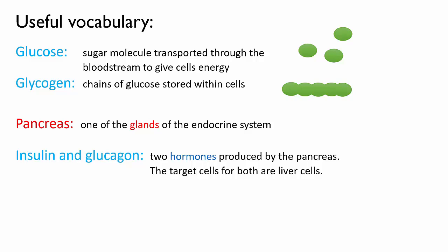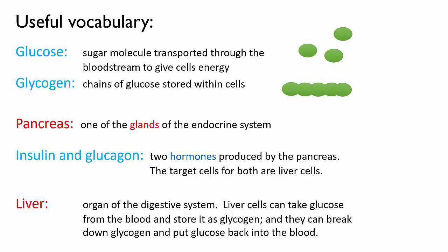The target cells for these two hormones, insulin and glucagon, are liver cells. Remember that the liver is an organ that's part of your digestive system. Its cells are really good at doing the chemical reactions that convert glucose into glycogen and then convert stored glycogen back into glucose. Notice that the vocab here is color-coded: the blue words are chemical compounds that exist as individual molecules in the body, and the red words are entire organs. Now we're ready to look at the negative feedback loop that keeps your blood glucose levels in homeostasis.